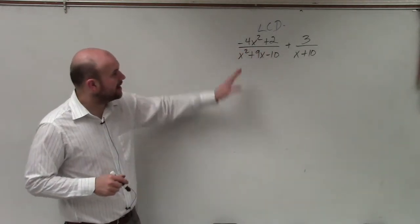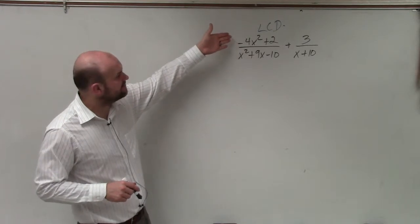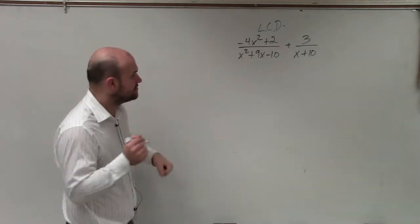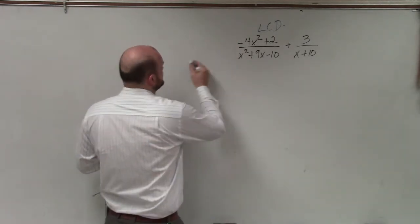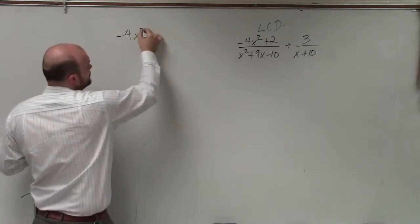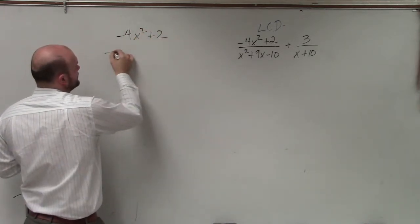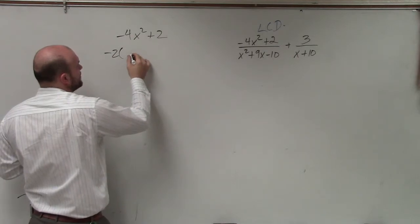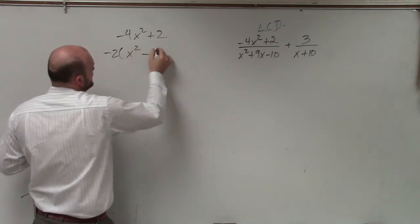So basically, when we look at this left-hand side, I can see I can factor out a negative 2. So if I have -4x² + 2, I'll factor out a -2. When factoring out a -2, I'm left with x² - 1.